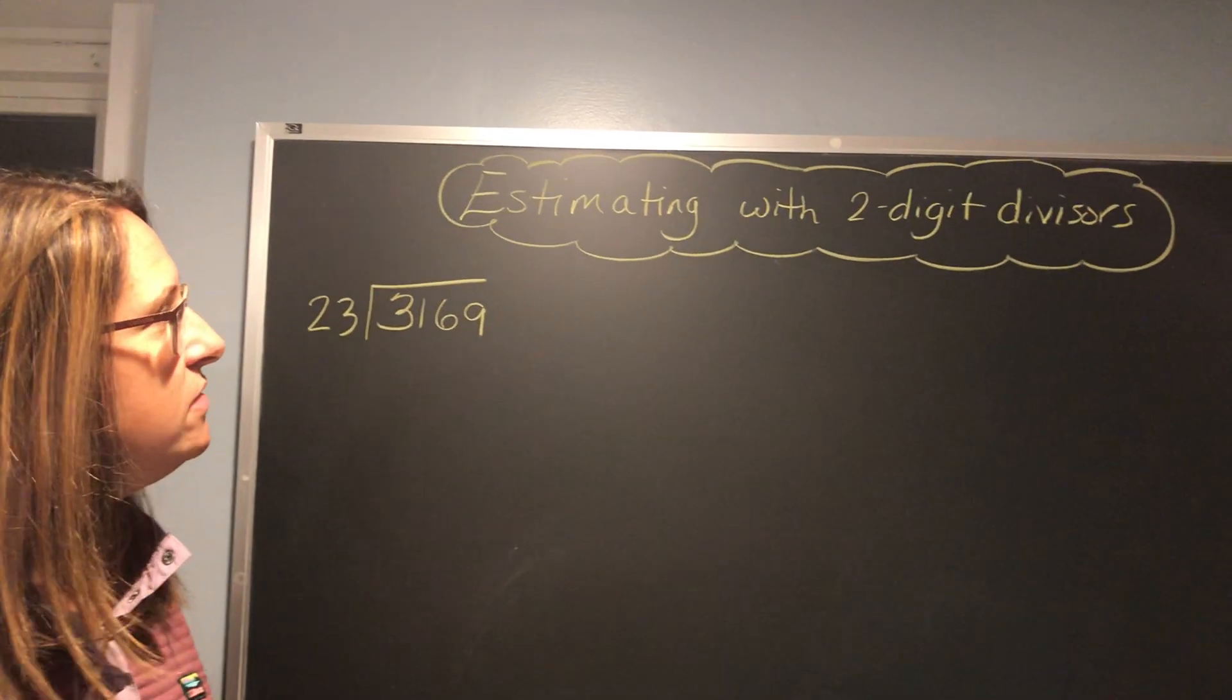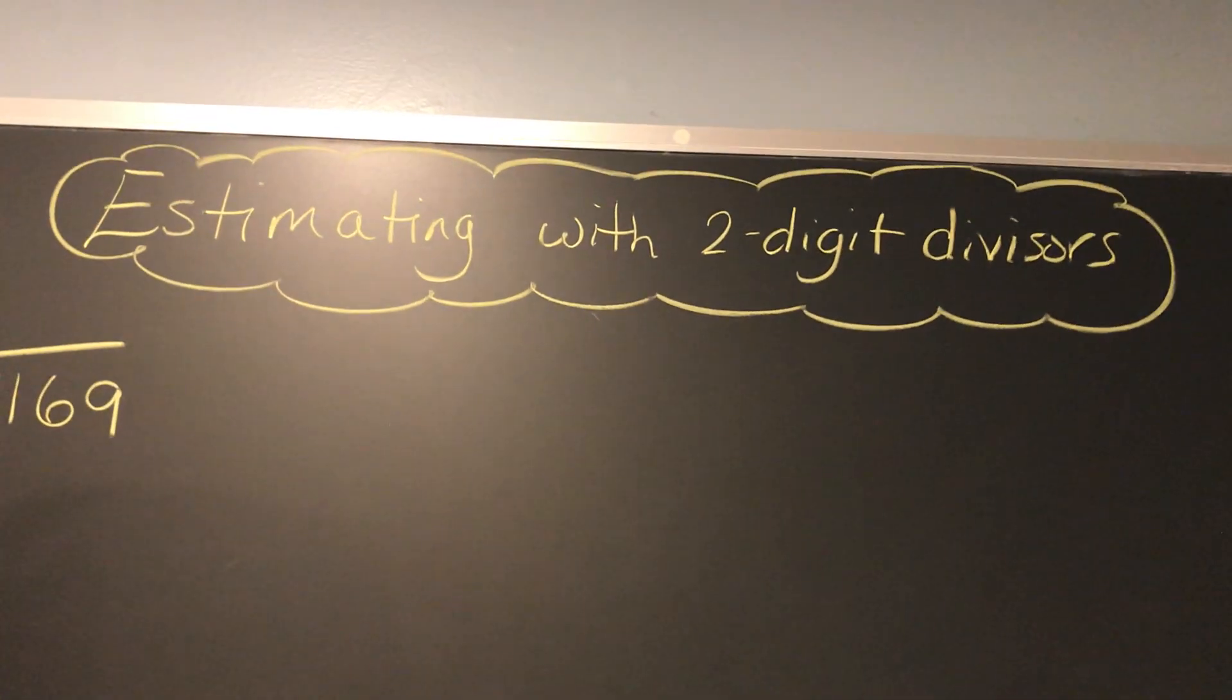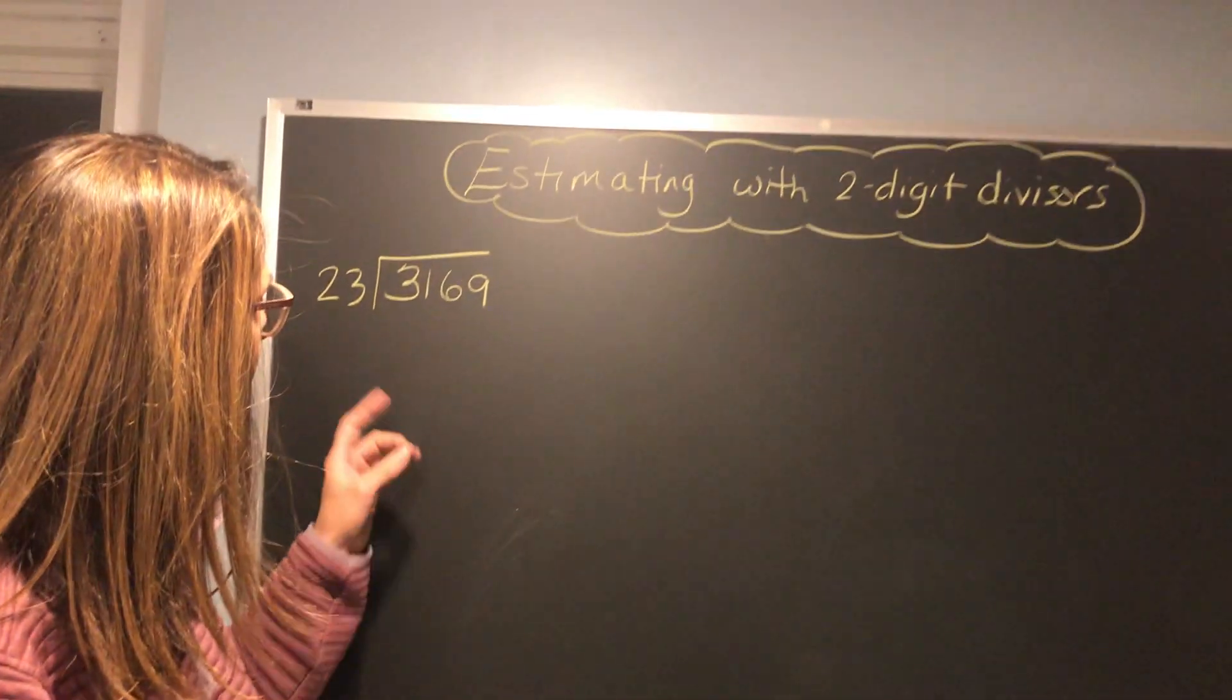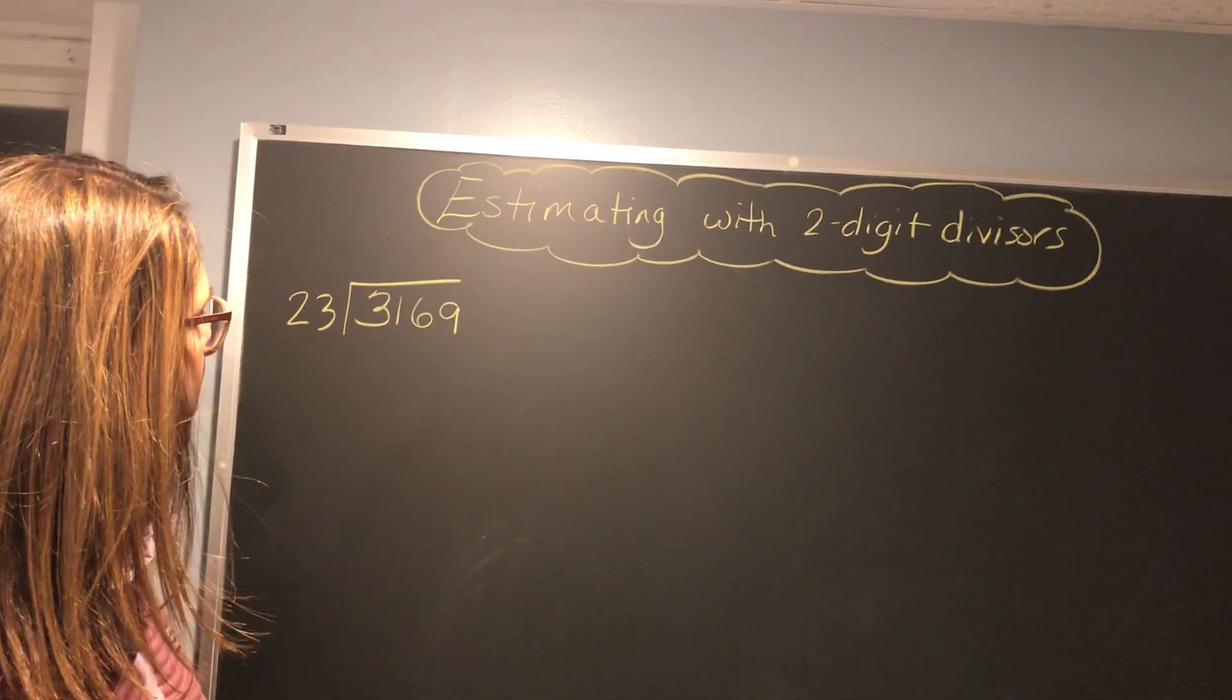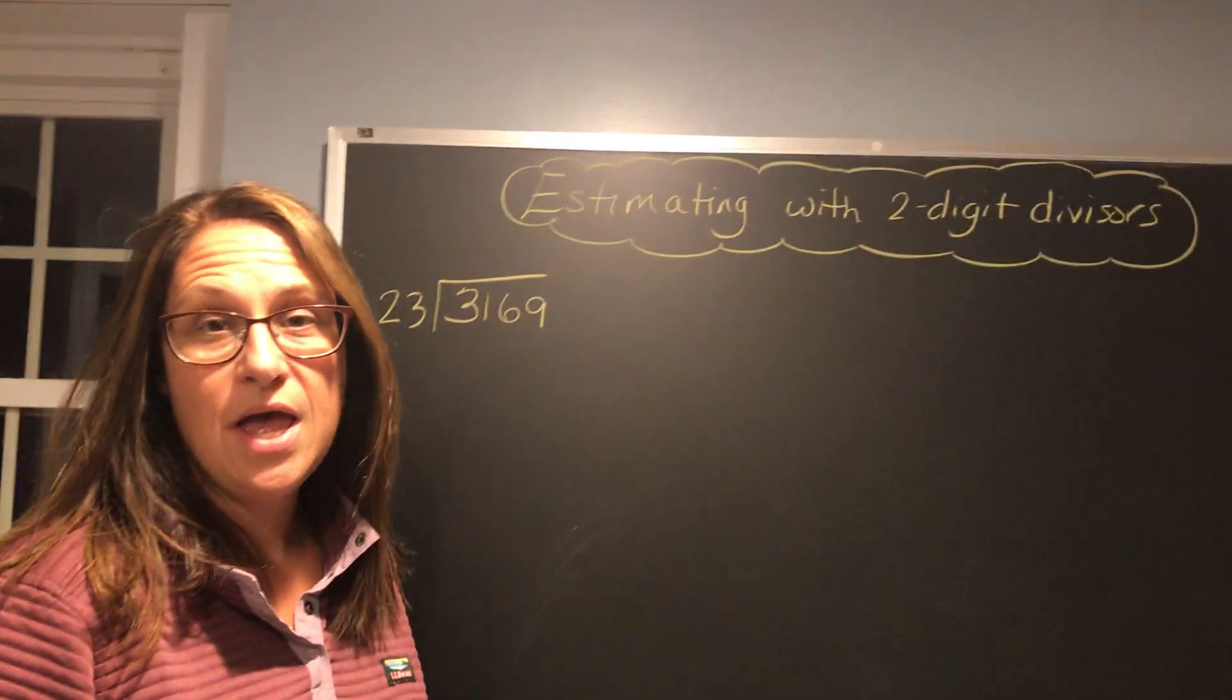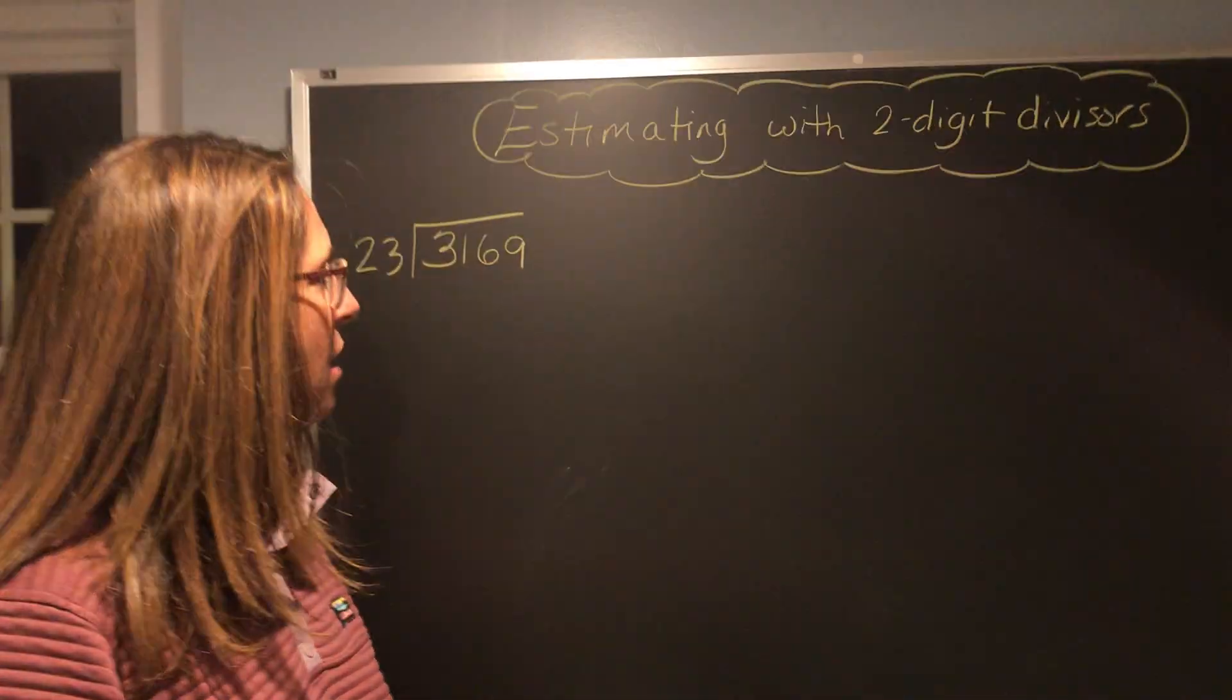Hi boys and girls. This video is about estimating with two-digit divisors. We did this in class on Friday. We have 3,169 divided by 23, and we're going to find out about how much that is.